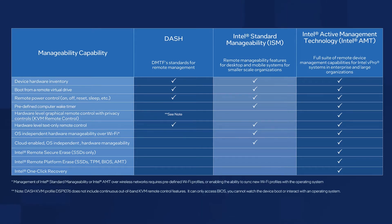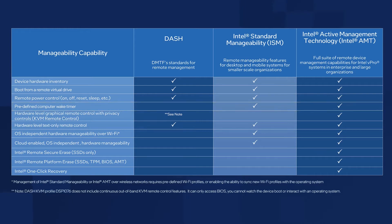If you compare the capabilities of ISM to DASH platforms, you can see we have three differences. First, we have support for predefined wake-up timers, also known as alarm clock. But more importantly, we have support for Wi-Fi network connections and cloud-based hardware management. Both are capabilities that are not supported on DASH platforms.